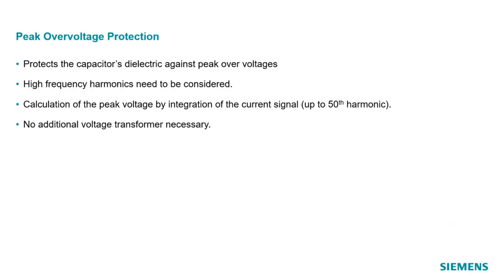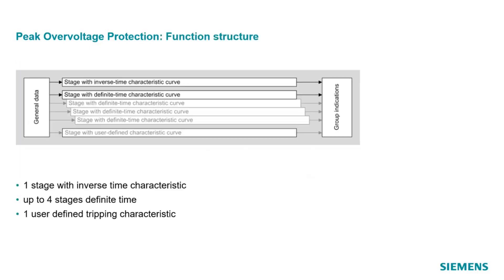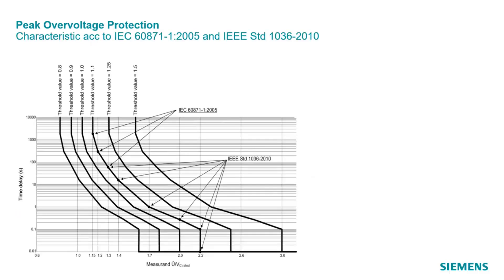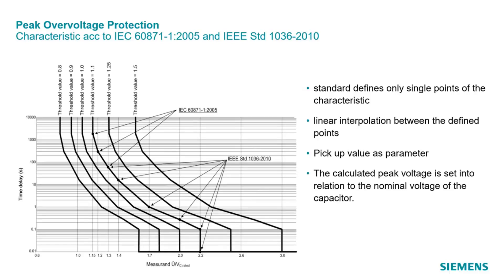The basis for this protection function are the standards IEC 60871 and IEEE 1036. The function has one predefined inverse time and one definite time characteristic. It can be extended by a user-defined characteristic and up to three more definite time characteristics. The standards define only single points of the characteristic, so the curve is completed by linear interpolation between these points. Additionally, the pickup value is a parameter which allows shifting the curve left and right — a value of 1.1 corresponds to the curve defined by the standard. The calculated peak voltage is set in relation to the nominal voltage of the capacitor, and the function monitors the voltage of each phase separately, issuing also single-pole tripping commands.